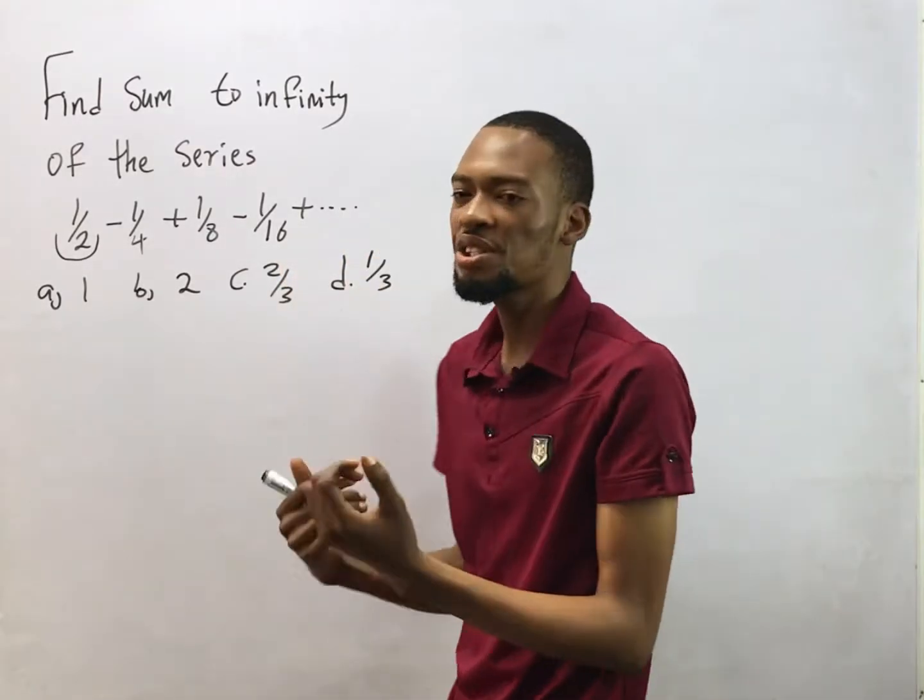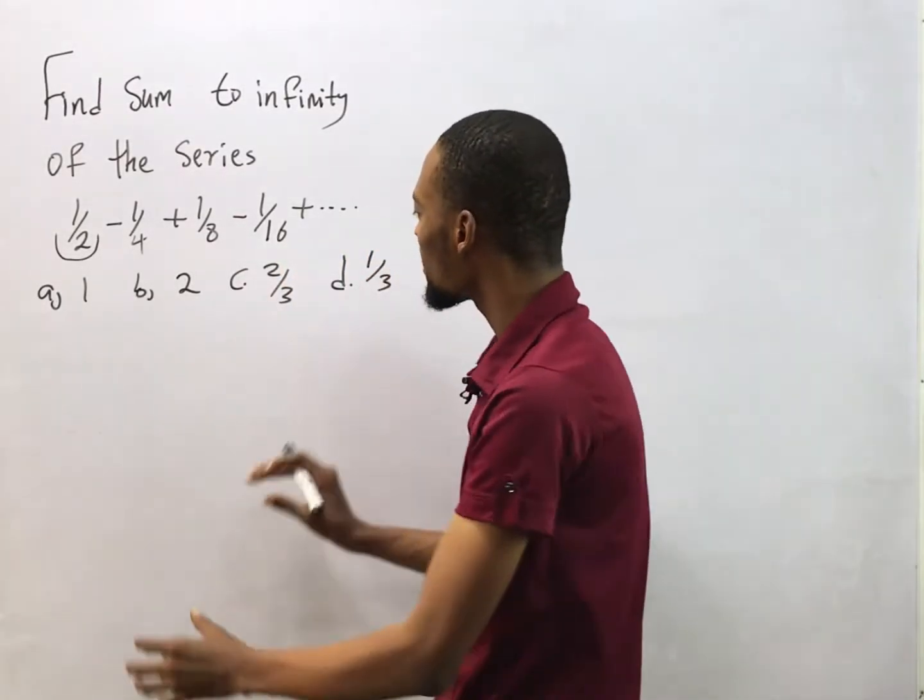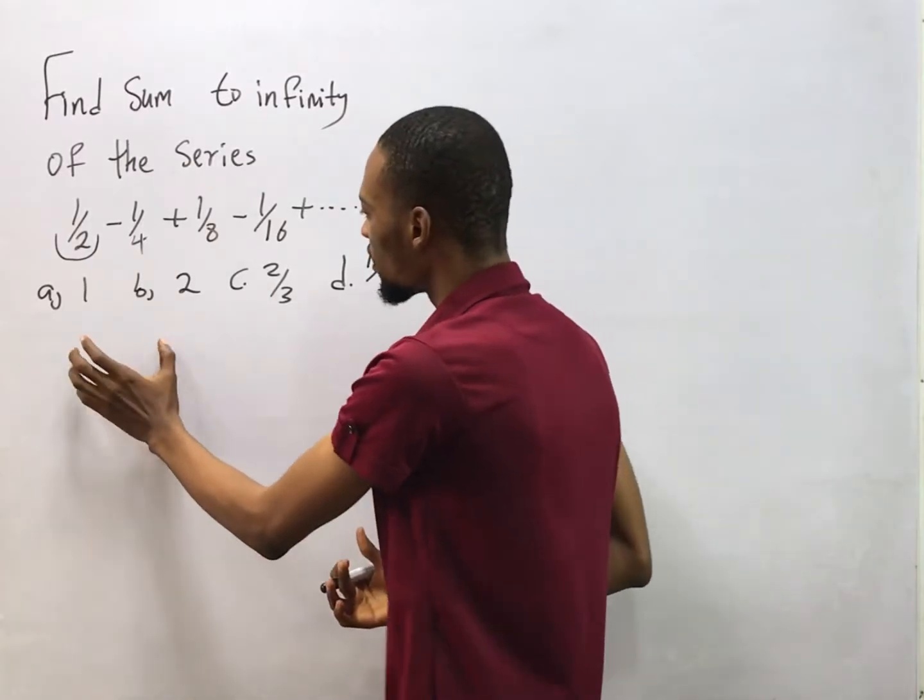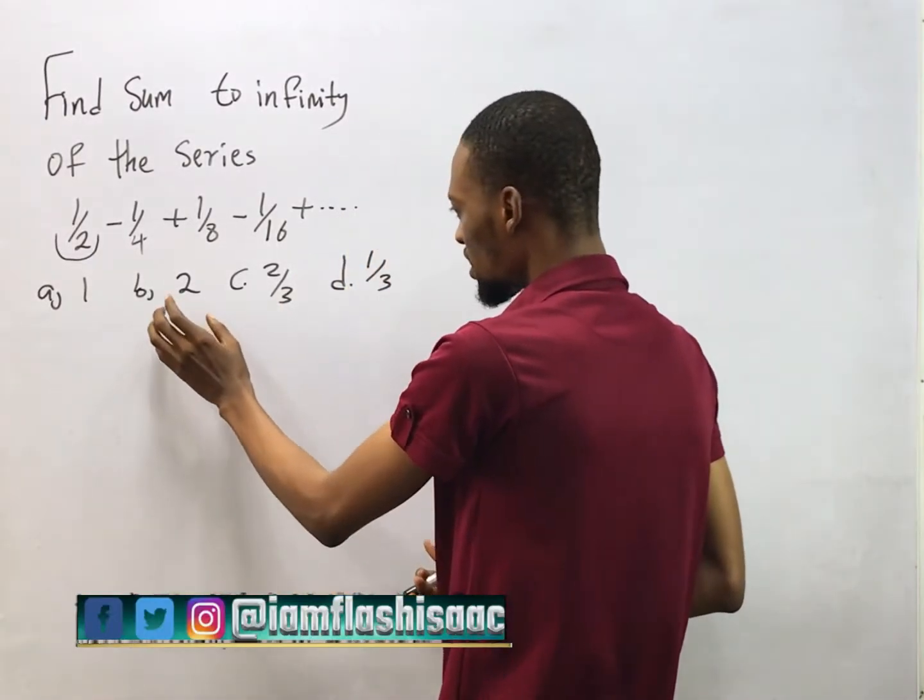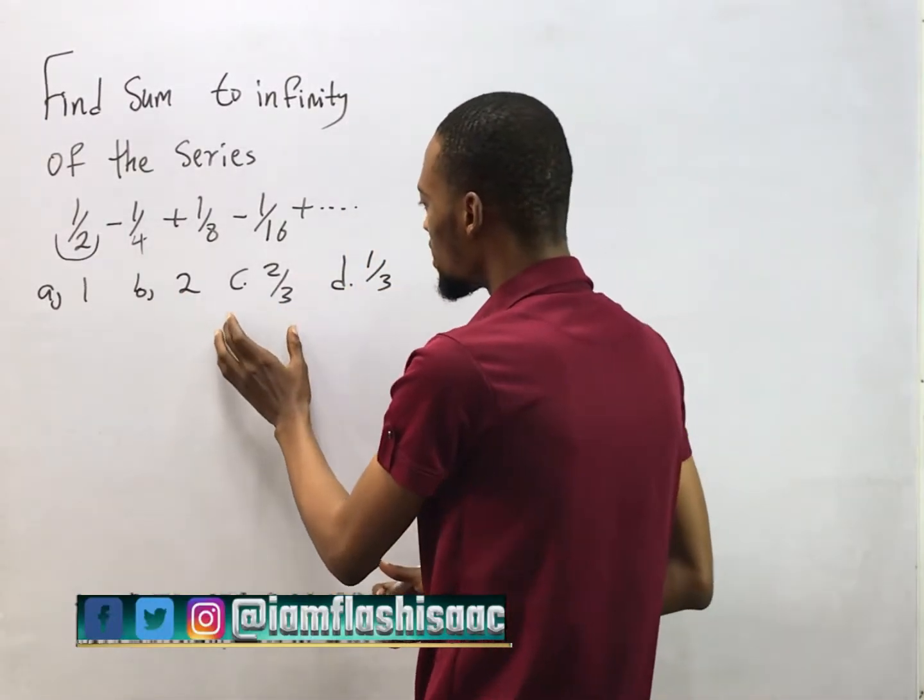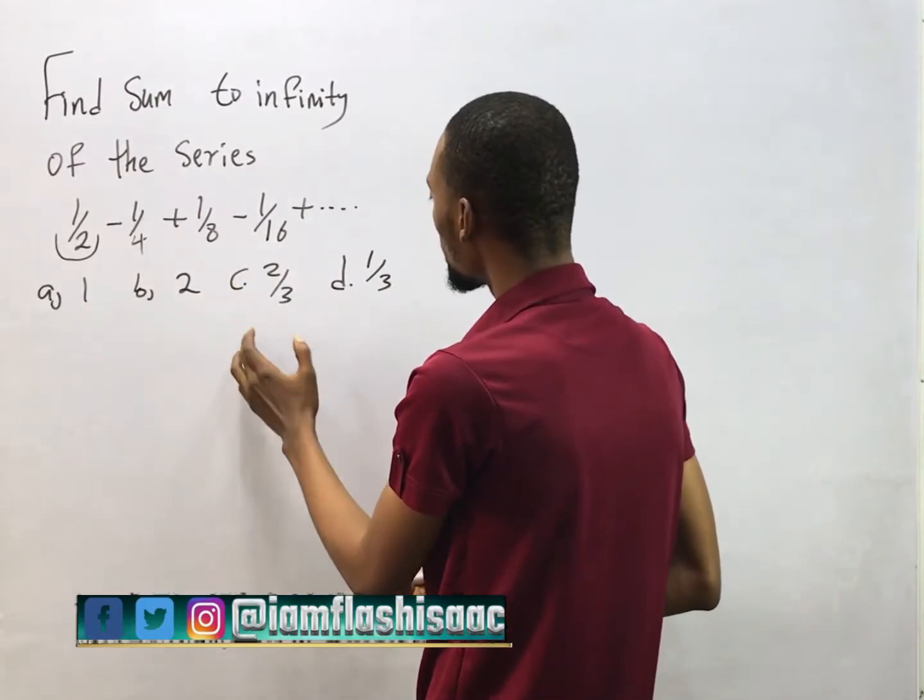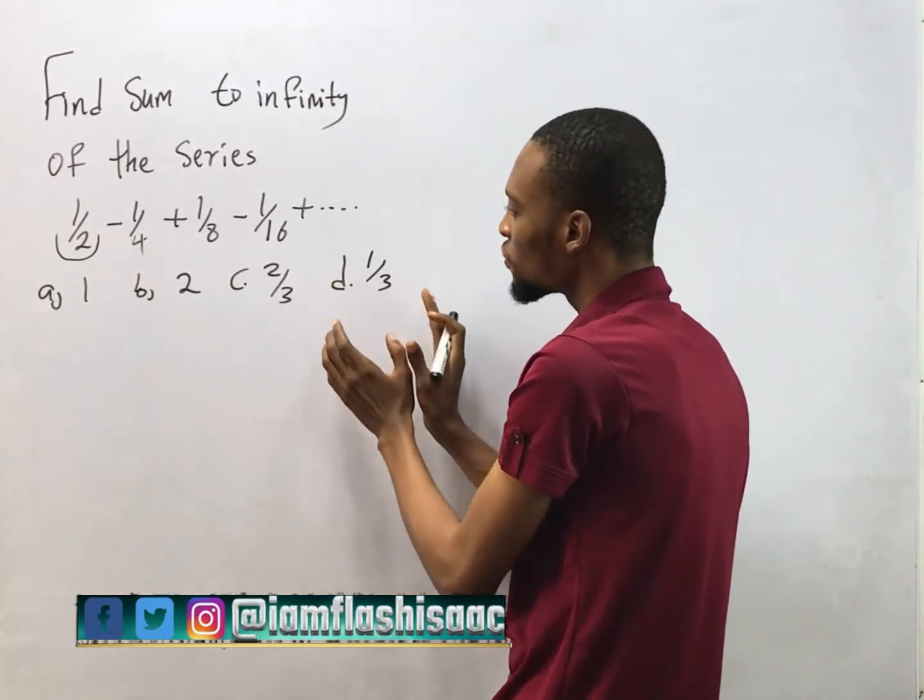These are the options. Option A says 1, option B says 2, option C says 2/3, and option D says it is 1/3.